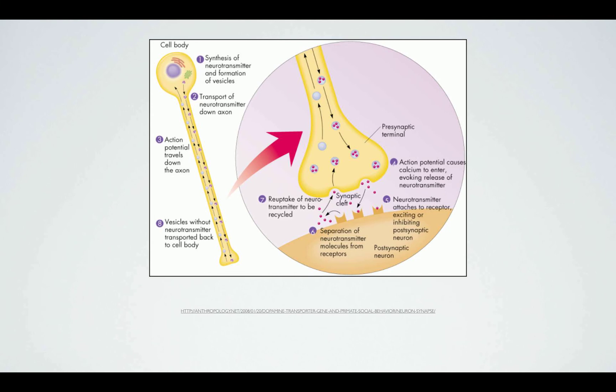The action potential is the electrical signal that travels down the axon of the nerve cell transmitting the electrical information of the brain to other cells. This electrical impulse propagates to other cells by crossing a gap called the synapse.